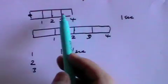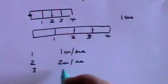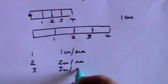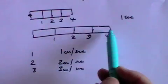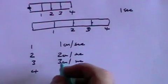Point three traveled from here to here, that's a distance of three centimeters in one second. And point four traveled from here to here, that's a distance of four centimeters in one second.